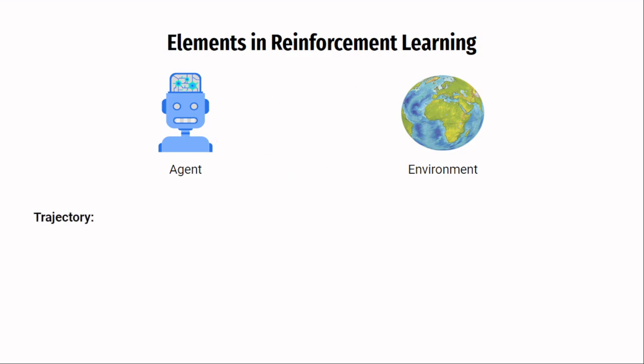The cycle starts with the agent pulling an observation from the environment. The agent processes the observation and takes an action in the environment. The environment then presents the agent with a reward for its previous action and another observation. The agent again processes the observation and takes an action. This cycle continues over and over again.